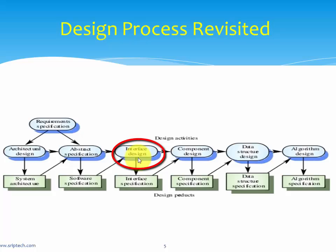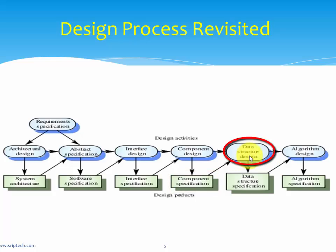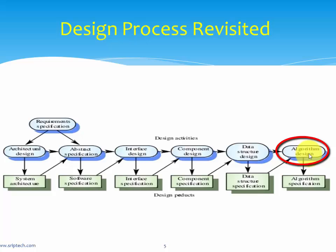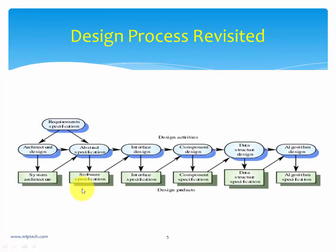From abstract specification we head to interface design, where we identify the various interfaces connected between subsystems and how they are interrelated, producing an interface specification. Then we design components, defining what services each subsystem performs, giving us a component specification. Next is data structure design — arrays, table structures, database management systems — giving the data structure definition. Finally, algorithm design puts all services into a process using an algorithm, which is later converted into a working program using a standard programming language.